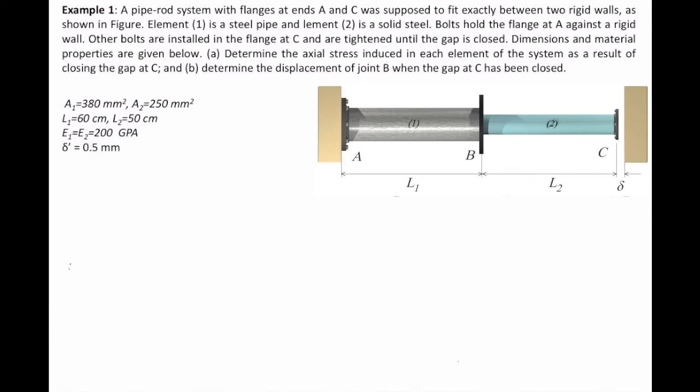Element number 1 is made from steel pipe and element number 2 is solid steel. Bolts hold the flange at A against a rigid wall, other bolts are installed at flange C, and are tightened until the gap is closed.